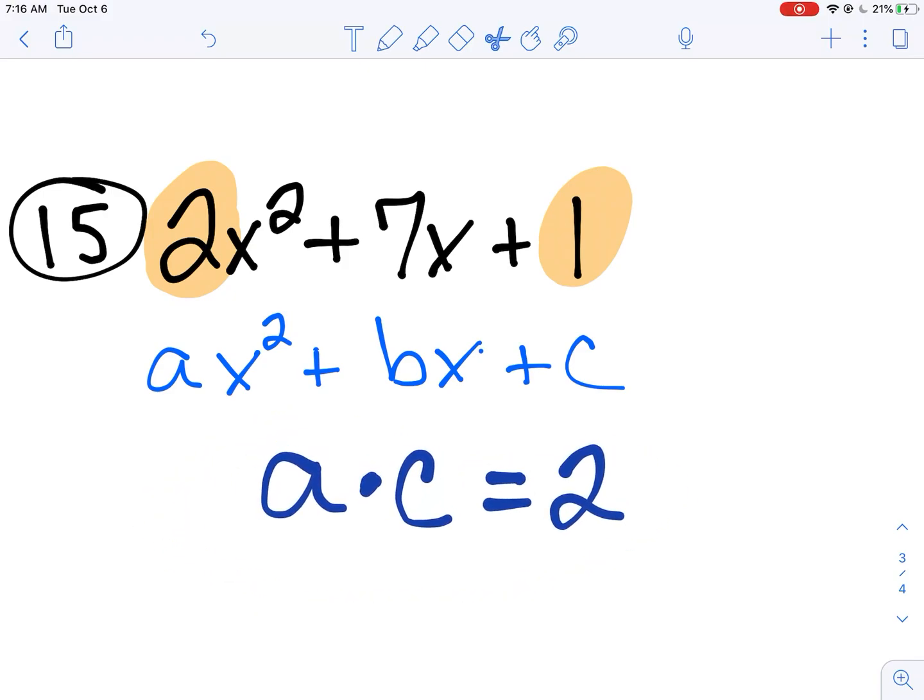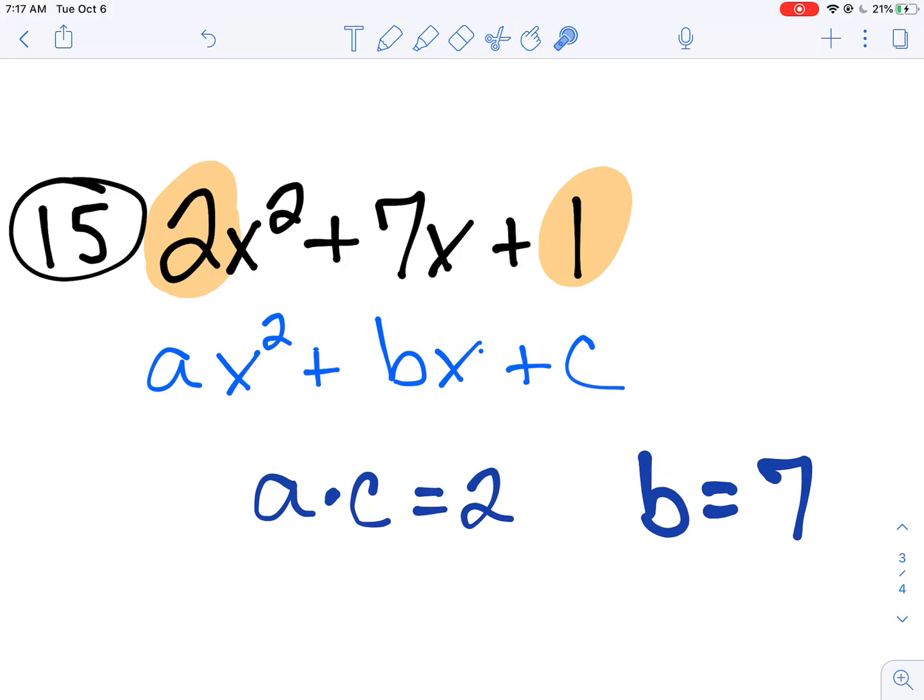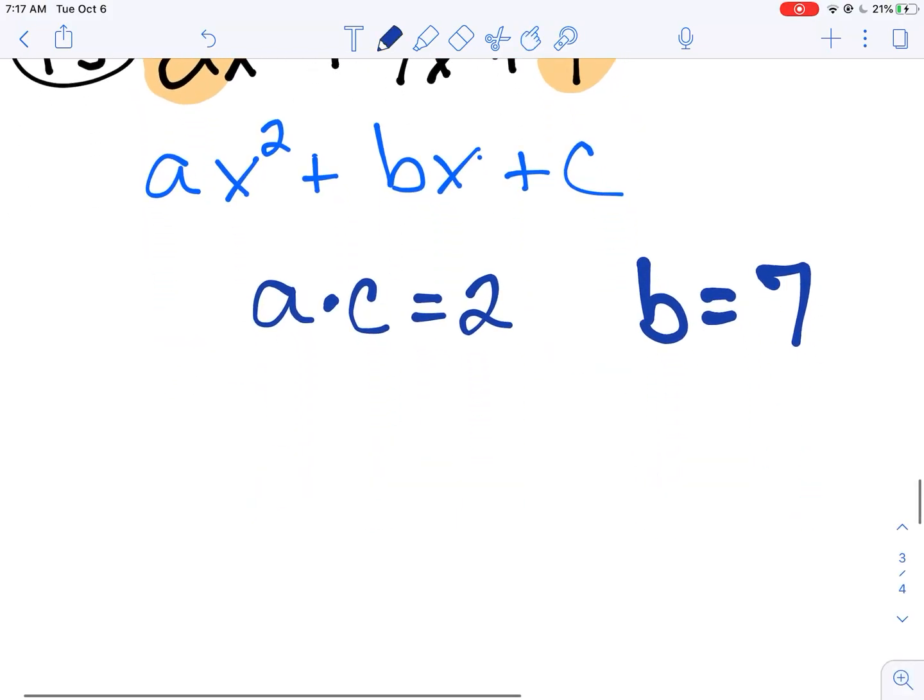Now I need factors of 2 that are going to add up to b, which in this case b equals positive 7. Let's see what we can do here. I'm going to make my little t-chart. Let's think of factors of positive 2. 1 times 2. Alright, if I add this up, I get 3. And that's it. Can't think of anything else. I don't know about you guys. I cannot think of any other integers that I can multiply to get an answer of positive 2.